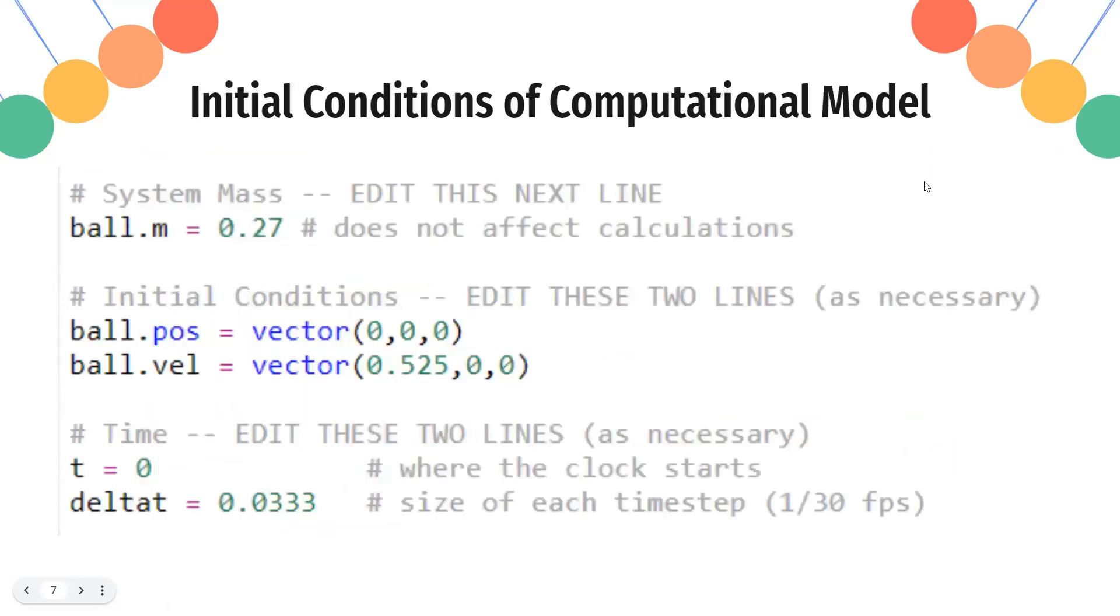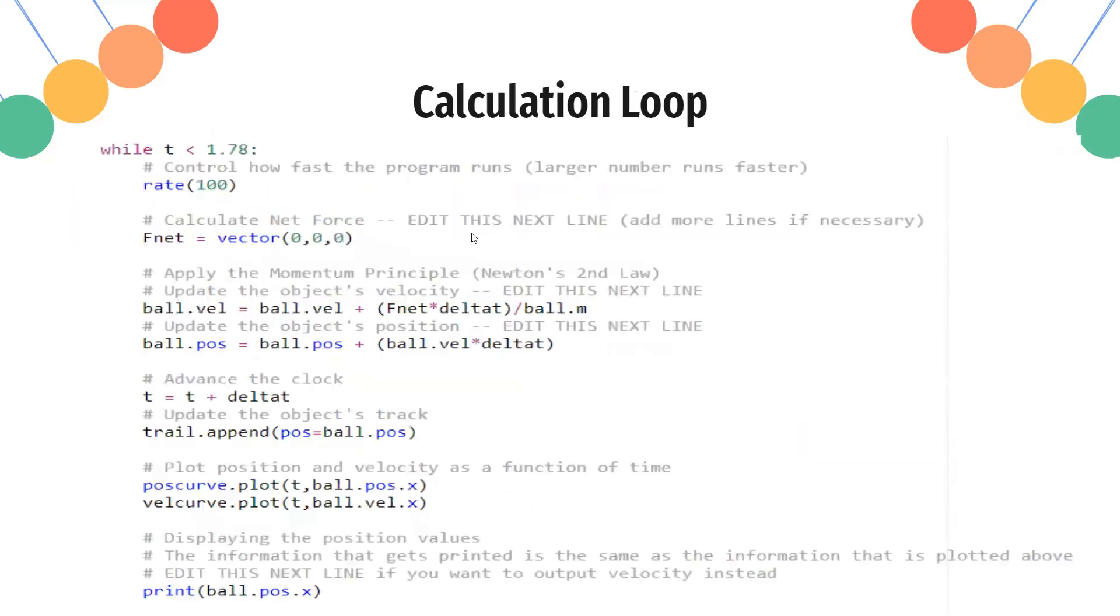And this is the initial condition computation model on Glowscript. As you can see, 0.25 is initial velocity. I changed the mass of the ball to reflect what it actually is, but of course it's not needed for the calculations. And in the calculation loop, we use the position update formula and velocity update formula in these lines right here. And we also make sure to set F_net equal to a vector of 0, 0, 0, just to make sure that we want zero net force to model a constant velocity. So those are the changes that we made there.